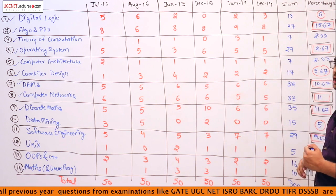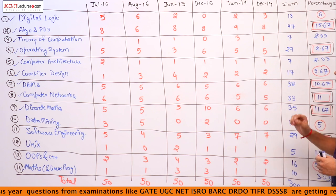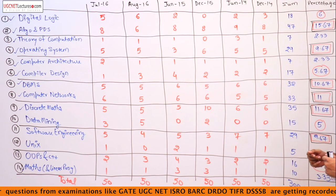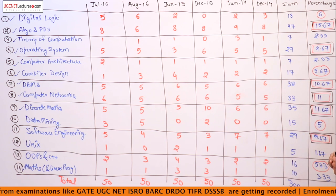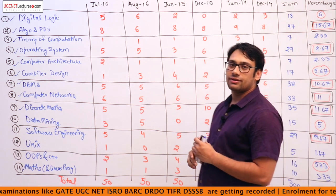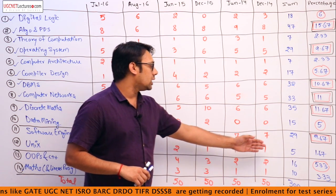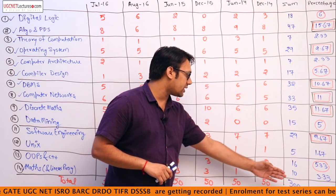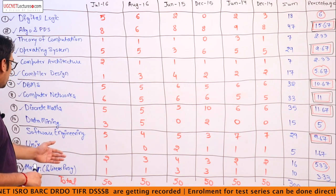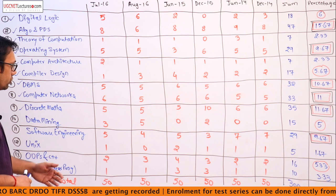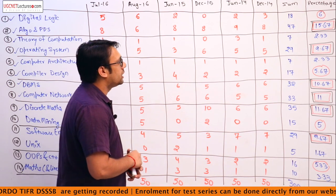For operating system, we have 29 questions. For compilers, 17 questions. For DBMS, 32 questions. For computer networks, 33 questions. For discrete mathematics, 35 questions. Software engineering covers around 29 questions. UNIX covers 5 questions. OOPS and C++ covers 16 questions and so on.